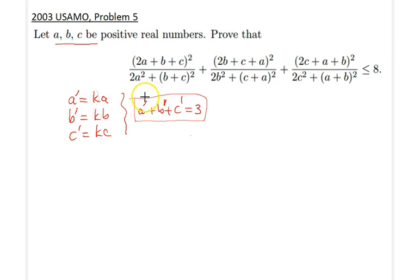For instance, you can just go ahead and multiply both the numerator and denominator of each of these fractions by k squared and you will have your terms in this fashion.